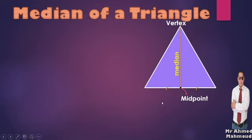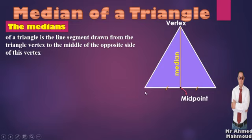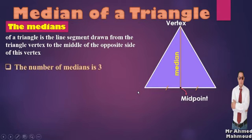If we connect between the vertex and the opposite midpoint, then this line is called a median of a triangle. The median of a triangle is a line segment drawn from a triangle vertex to the middle of the opposite side. The line segment connects between a vertex and the opposite midpoint. Now, how many medians do we have? Because we have three vertices, we can draw a median from each vertex, so we have three medians. Any triangle has three medians.